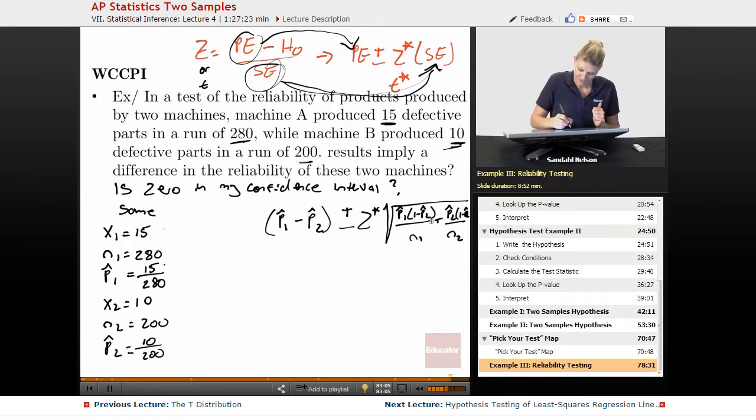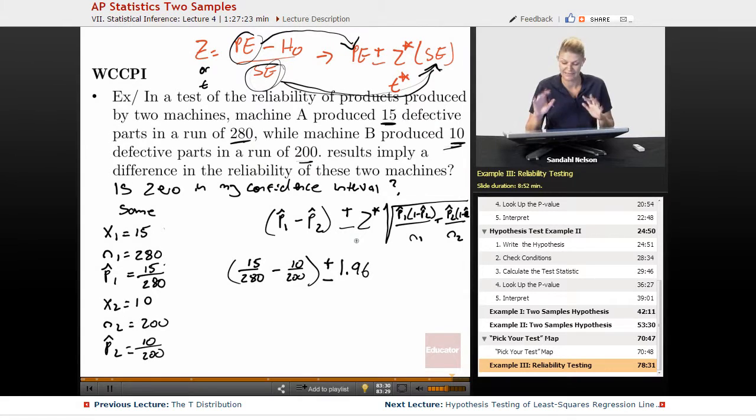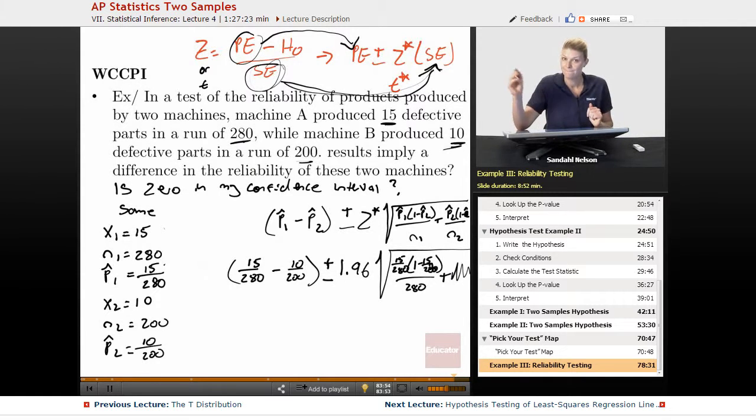So we're plugging everything in. So we say 15 over 280 minus 10 over 200, plus or minus, we're doing a 95% confidence interval. So we should have this memorized, it's 1.96 is your z star. If that's not clear, go back to a couple lectures and remember how to look this z star up. It's going to be exactly the same with these two samples. And then we're putting it all in here. So 15 over 280, 1 minus 15 over 280, over 280, plus, and then you'll write out the same thing for p2. But I'm running out of room, so I'm assuming you know how to do that. So now let's do it in our calculator.